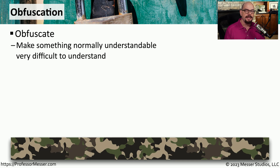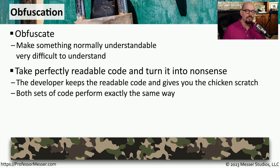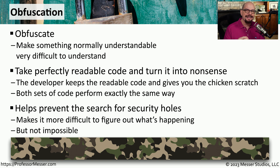Another security technique that helps protect data is obfuscation. This is a process that takes something that is perfectly understandable and turns it into something that's very difficult for humans to recognize. For example, a developer could write some code that's very easy to follow and understand as you step through the code base. But some developers will run that code through an obfuscation process and then give you the obfuscated code. This helps them protect their code base, but still allows them to work with the original code. Both the original code and the obfuscated code work exactly the same way — it's just that one is much easier to read than the other. You might also see attackers use obfuscation to hide what's going on within malicious code, which is why there are tools that can deobfuscate certain types of code.